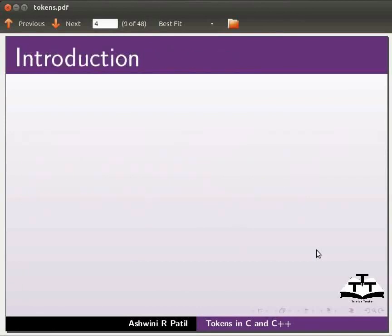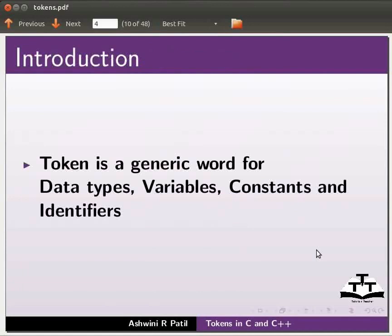Let us start with an introduction. Token is a generic word for data types, variables, constants and identifiers.